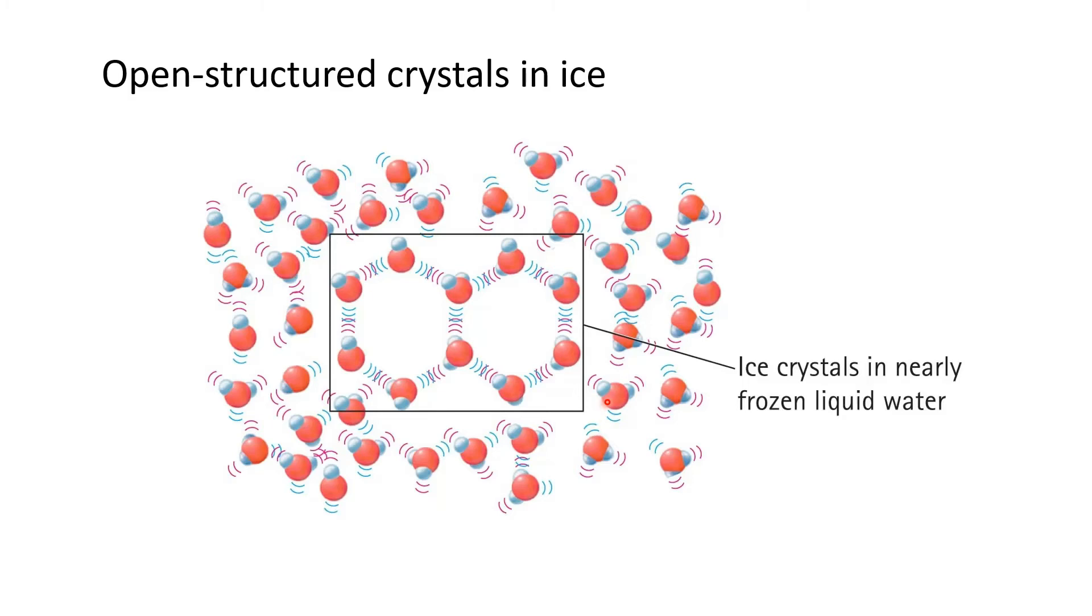Below 4 degrees Celsius, the open crystals form, which actually spreads out the volume, makes it take up larger volume, and decreases the density.